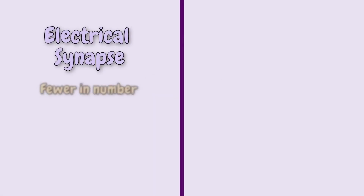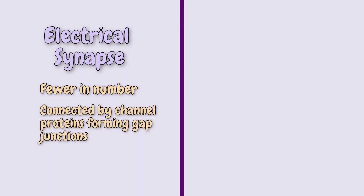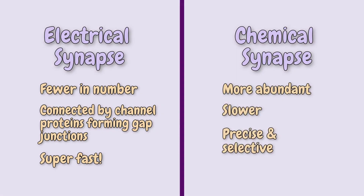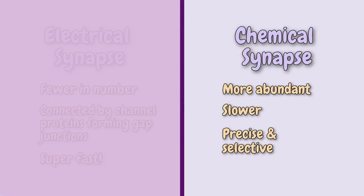Electrical synapses, which are fewer in number found in the nervous system, physically connected by channel proteins forming gap junctions, and are super fast. Then there are the chemical synapses, which are more abundant, slower, and more precise and selective of the messages they send. In this lesson, we'll speak about the chemical synapses.